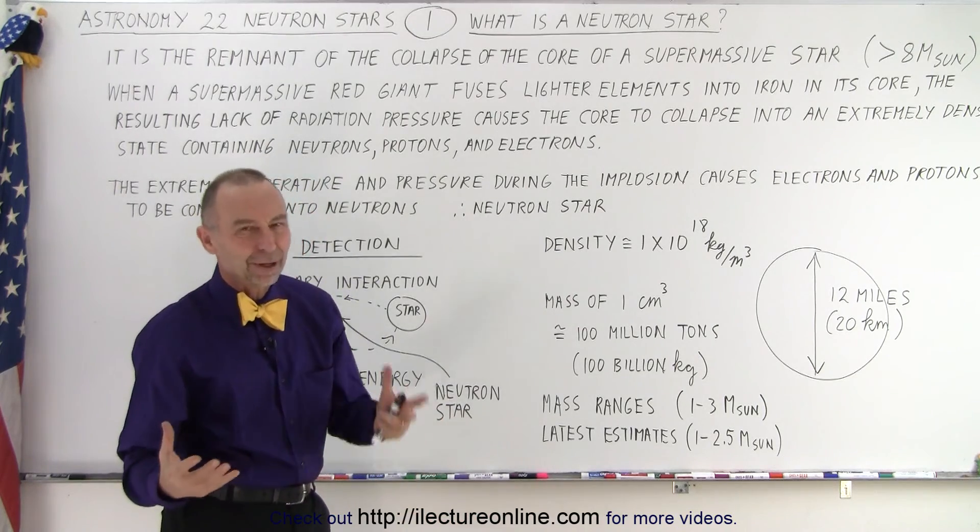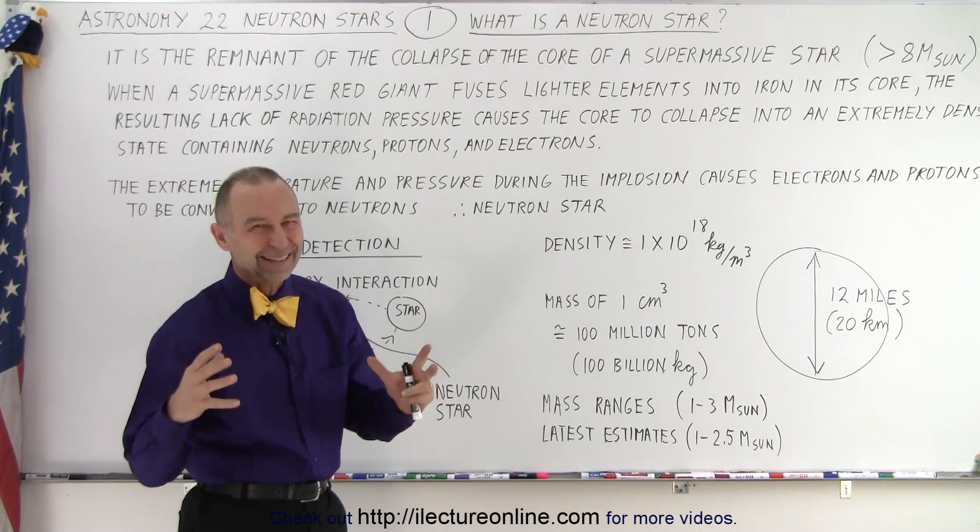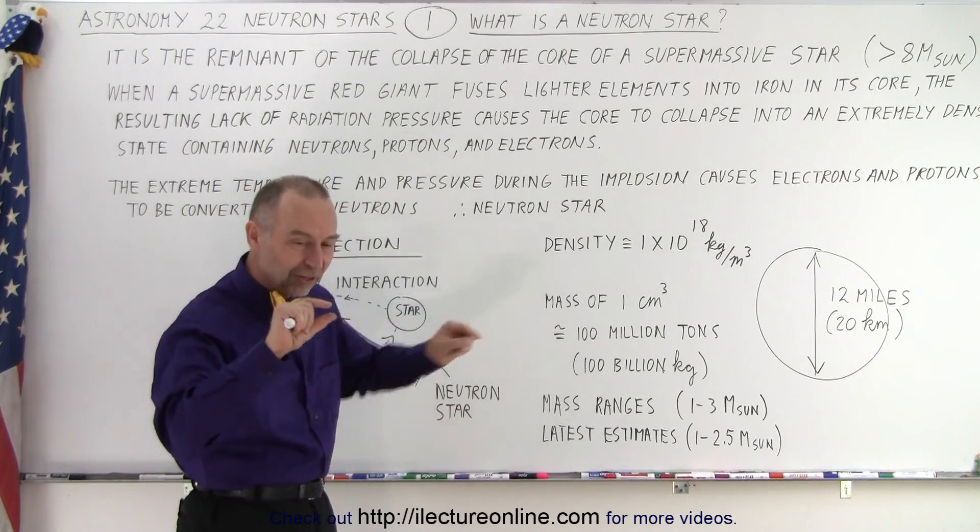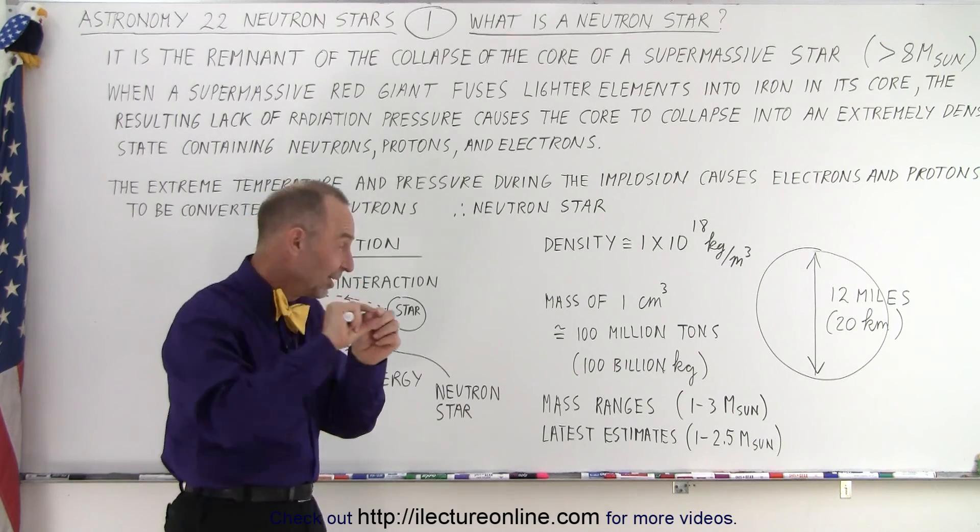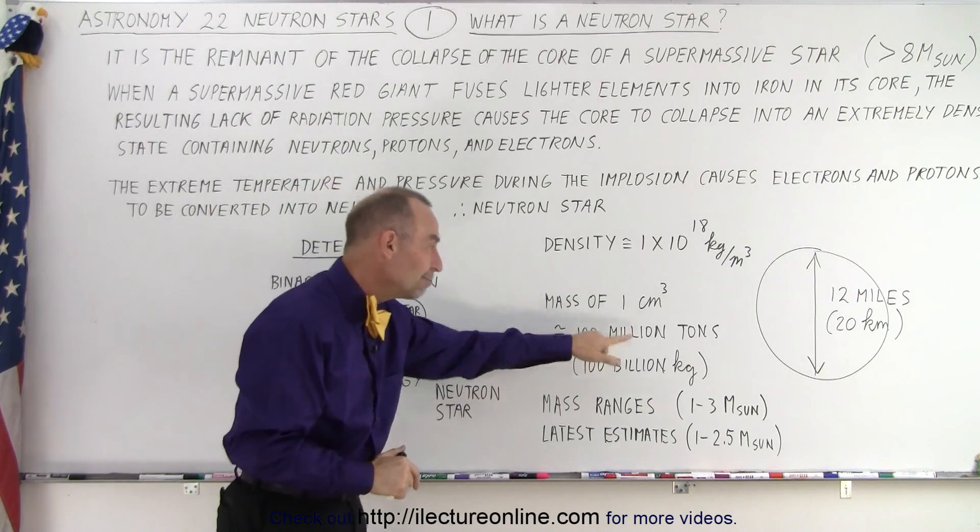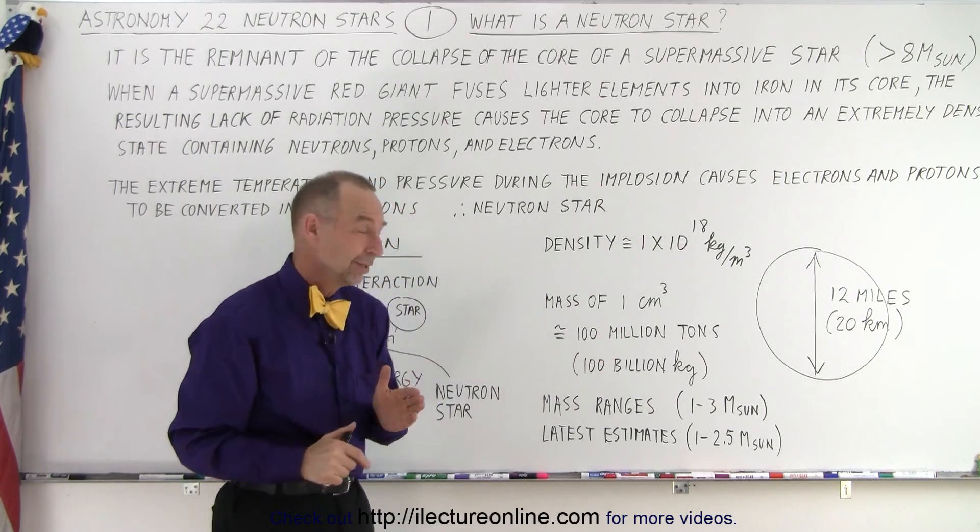Well, not exactly, but it has the same consistency. Anyway, at least the same density. So the mass of a single cubic centimeter, now you know how small a cubic centimeter is, very tiny. Imagine something that small has a mass of 100 million tons, which is 100 billion kilograms. Wow.